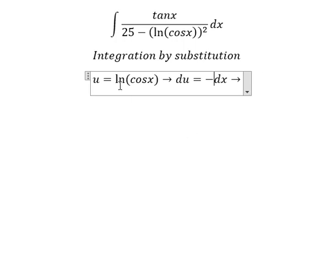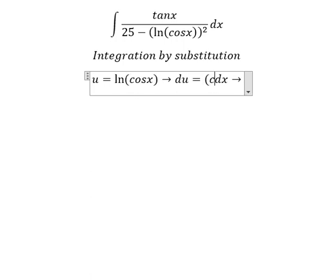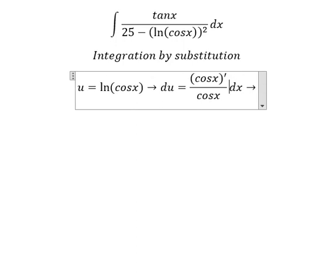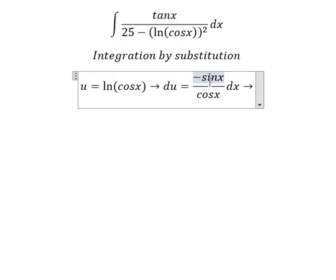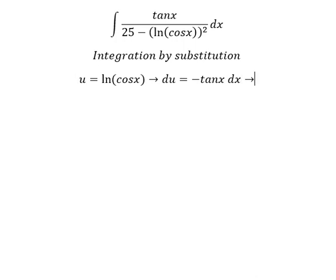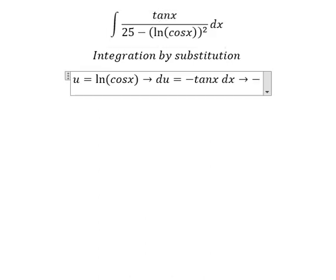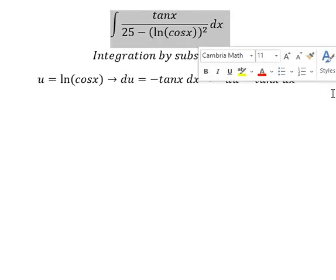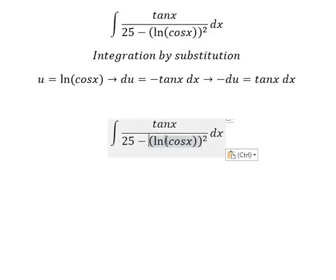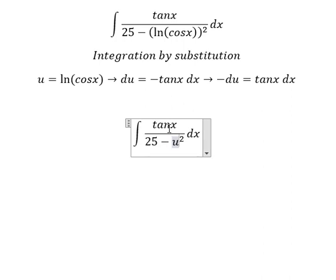So if we do the first derivative of ln(cos x), we need to do the first derivative of cosine x over cosine x, and this gives us negative sin x, and sin x divided by cosine x is tan x. So we put the negative to the left side — we change tan x dx into negative du.